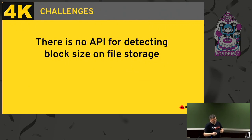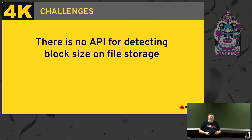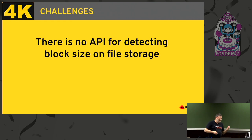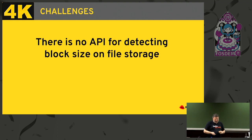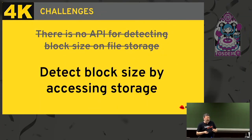With all these changes, we're still not ready because we need to detect the block size somehow to use it, and there was no obvious way to do it. The way to solve this was to look at QEMU's code — you can find a lot of interesting stuff there. We found that QEMU solves the issue by accessing storage. This is now what VDSM does: detecting block size while accessing storage.